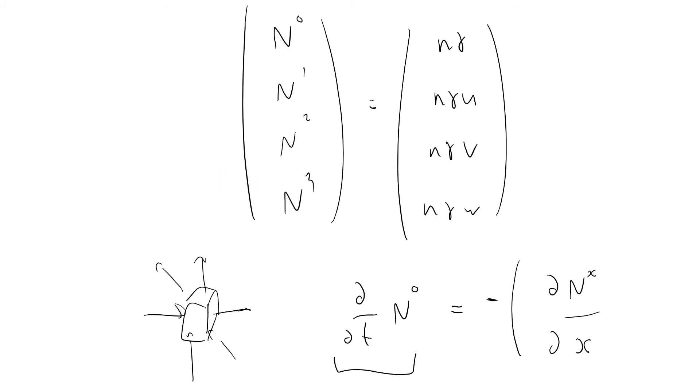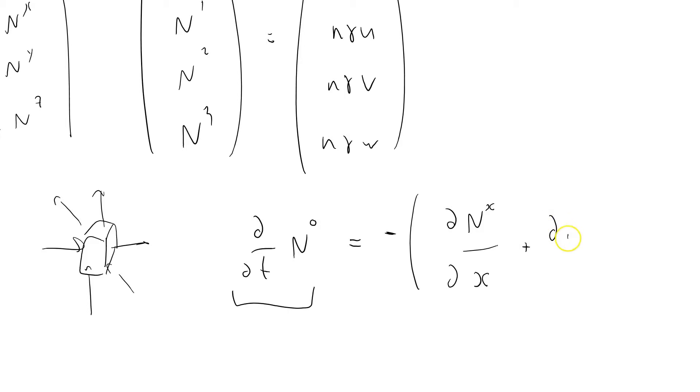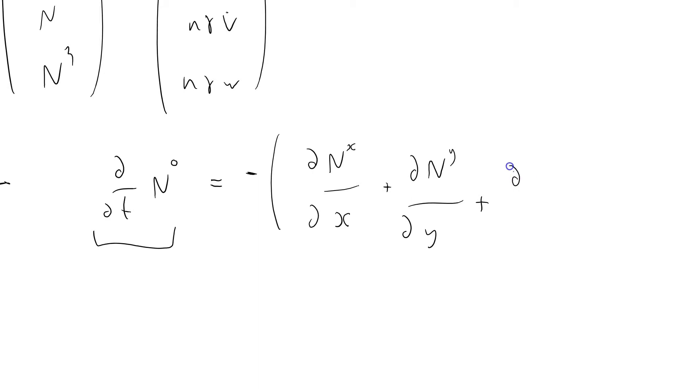I've just casually called it N0, 1, 2, 3. I could just as easily have called it Nt, Nx, Ny, and Nz, plus di Ny by di Y for this term here, plus di Nz by di Z.